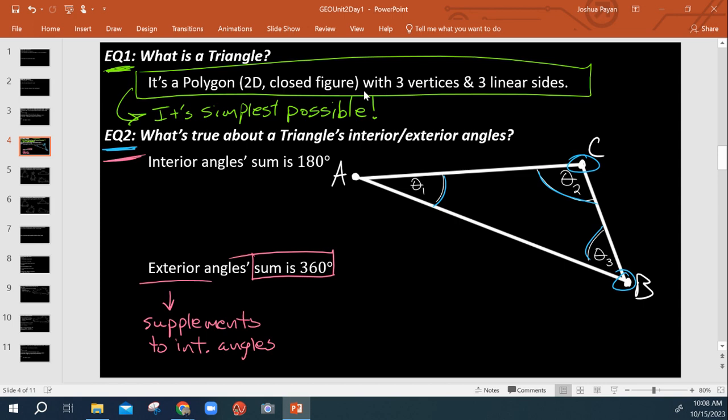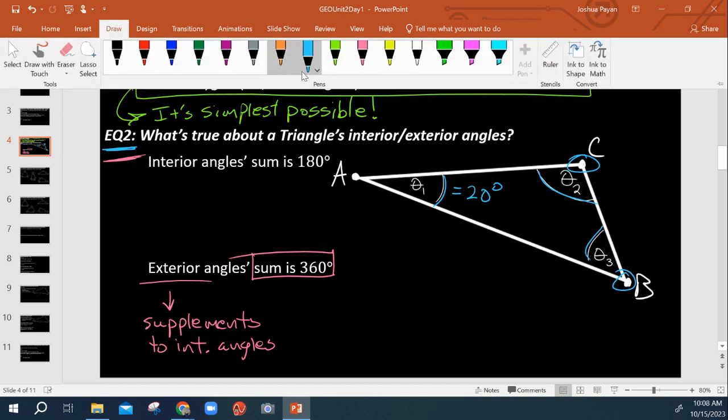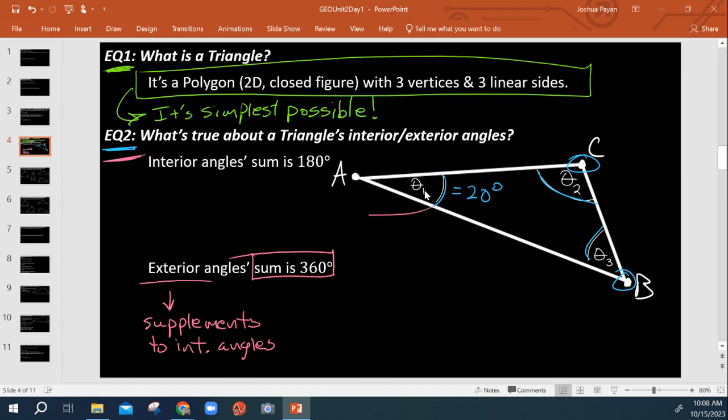So let's say theta 1 here is, let's say that's 20 degrees. So that means this exterior angle is its supplement. This exterior angle here, we'll call it alpha 1. So that means alpha 1 here must be 160 degrees. Because 160 plus 20 gives me 180, hence the term supplement.